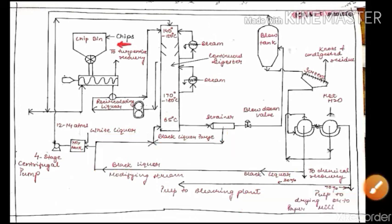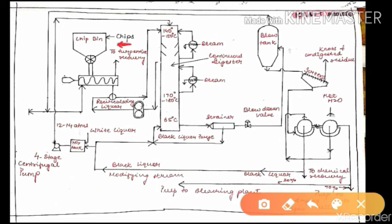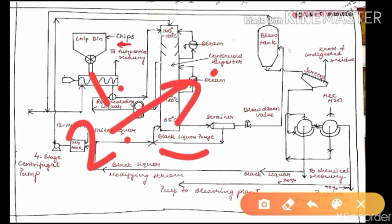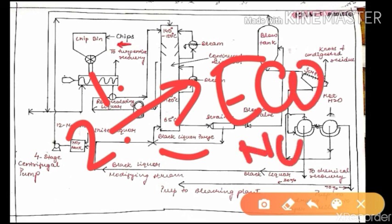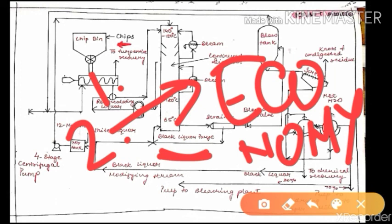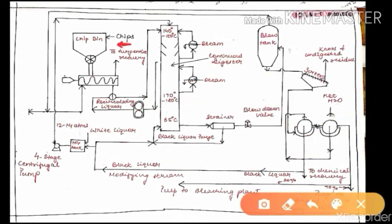We do not waste any part of the process in industry because it is not economical. There are two basic reasons for the recovery of black liquor. First, the environmental reason — if we discharge black liquor directly, there will be environmental and water pollution and crops will get damaged. Second, the economic reason — the economy of the industry must be stabilized. So black liquor is recovered, recycled, and converted back into white liquor.